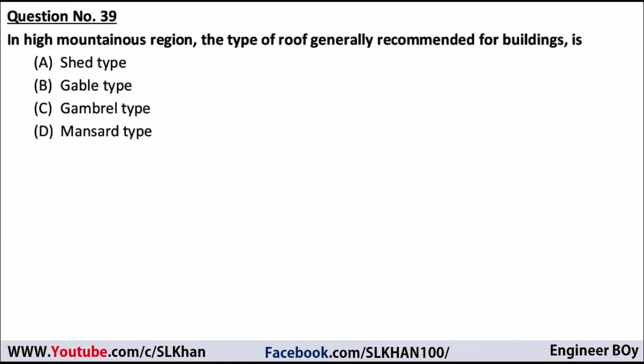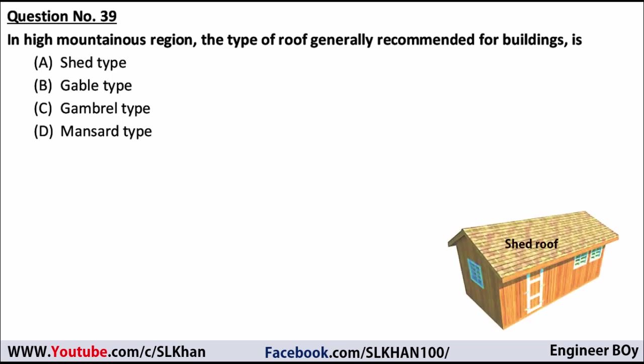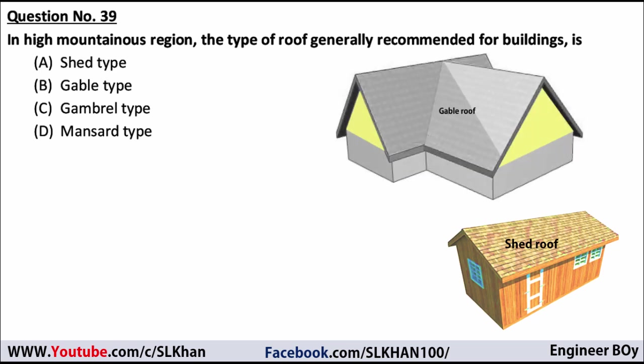Question 39: in high mountainous regions, the type of roof generally recommended is — shed type, gable, gambrel, or mansard? Shed roof cannot be an option because it is two-sided. In high mountainous regions there can be snowfall and heavy rain. Gable is also not the best option as it is a two-way sloping roof. Gambrel and mansard are both possibilities.